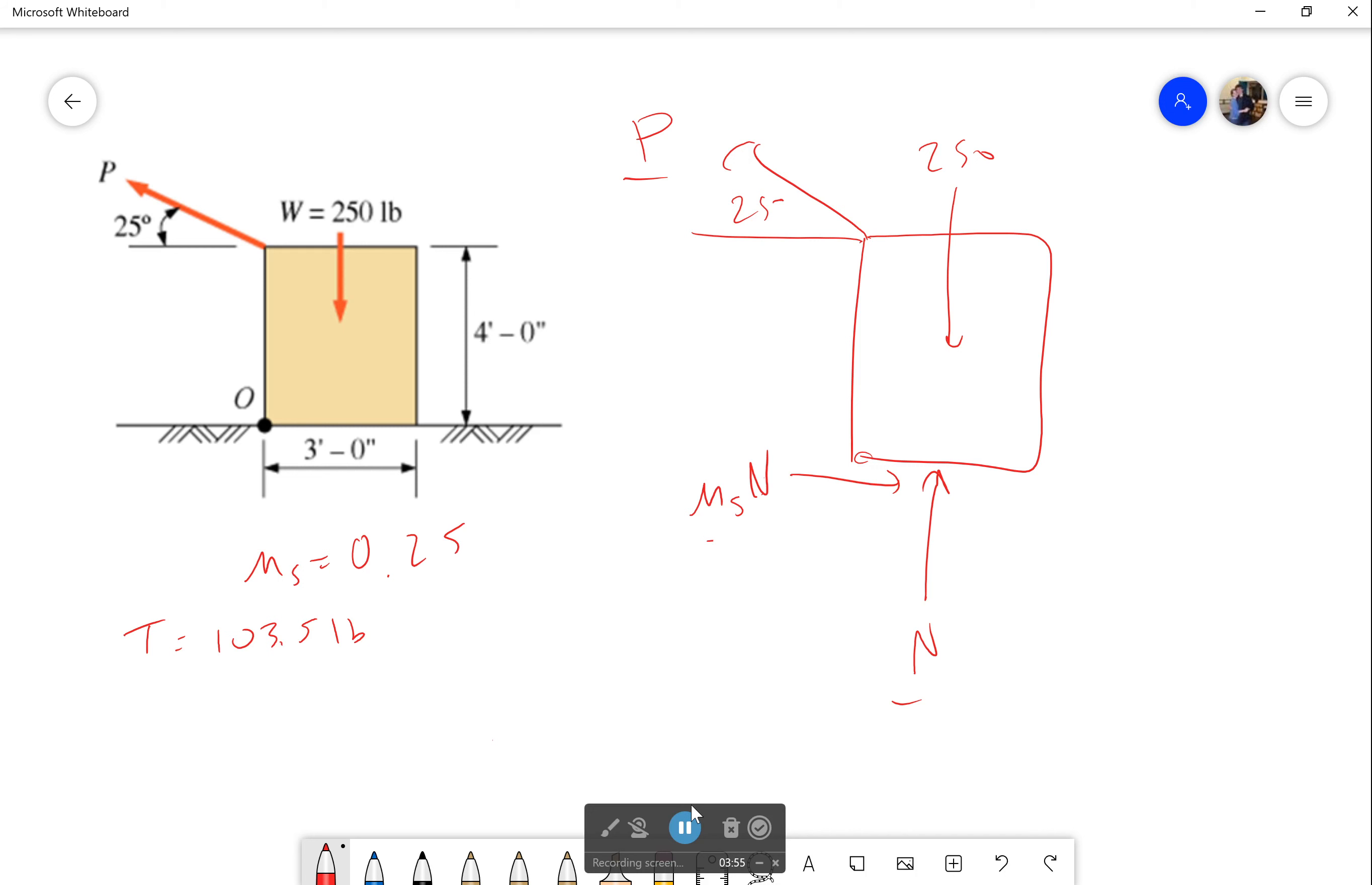Sadly I have to do some algebra. It's not going to be super easy but it's not too terrible either. Let me make a little bit more space by moving that in. There we go. So sum of the forces in the X direction will equal my frictional force minus the horizontal component of P, so P cosine of 25. That will be equal to 0.